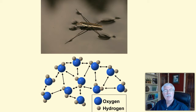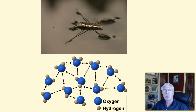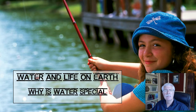Water boils at 212 degrees Fahrenheit and freezes at 32 degrees Fahrenheit. Water can absorb a lot of heat before it begins to get hot. A large body of water heats up very slowly and cools down just as slowly. This property allows living things to survive in water's fairly constant environment.